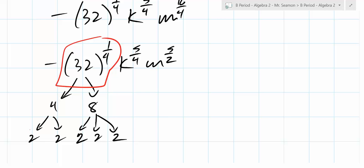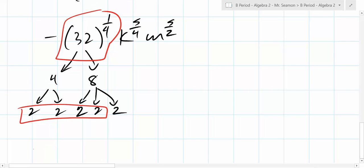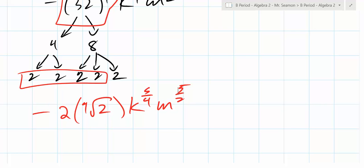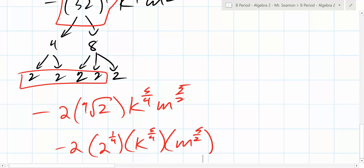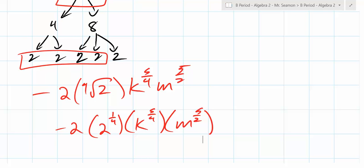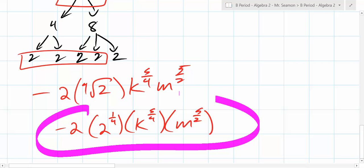How many 2s do you see right there? 5. But it's 4th root. You can only pull out 4, right? Those go away. So it becomes negative 2 times the 4th root of 2, K to the 5/4 and M to the 5/2. You could leave it. That's a little mixed. That's radical and exponent form together. That's totally fine. Or you could write it as negative 2 times 2 to the 1/4, K to the 5/4. The only reason I'm putting in the parentheses is that's super clear.